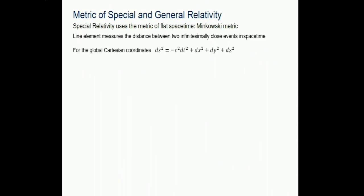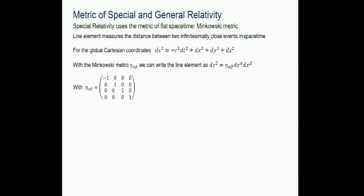In special relativity, taking Cartesian coordinates gives the Minkowski metric. From that expression alone, everything in special relativity can be derived: the invariance of the speed of light, E² = p² + m², Lorentz transformations - all follows from the geometry. This is a global flat metric, the Minkowski metric.